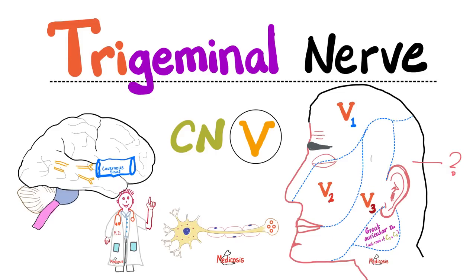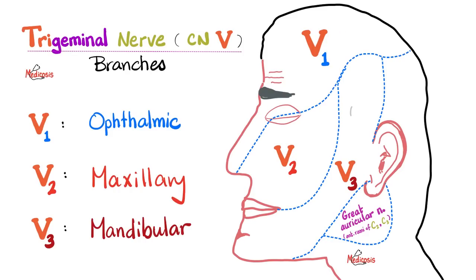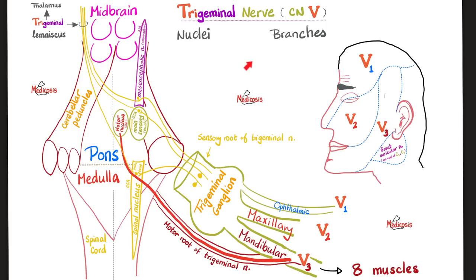V3 supplies eight muscles — four muscles of mastication and four muscles not involved in mastication. What are the three branches of the trigeminal nerve? V1 is the ophthalmic, which supplies the upper area of the face including the tip of the nose. V2 is the maxillary nerve, supplying the middle area, and V3 is the mandibular nerve. In most cases of trigeminal neuralgia, the pain occurs over the areas supplied by V2 and V3.